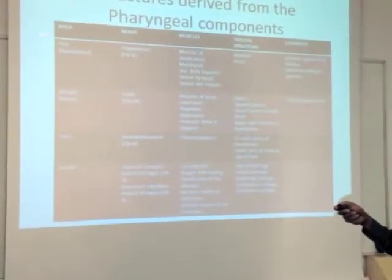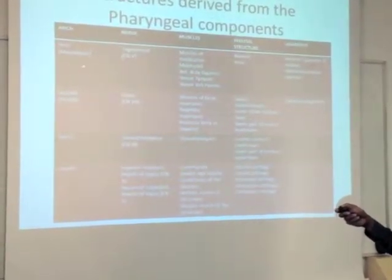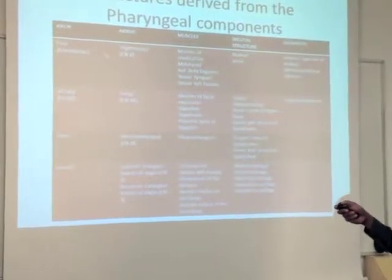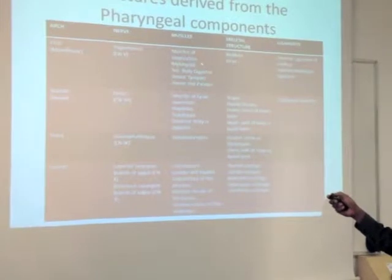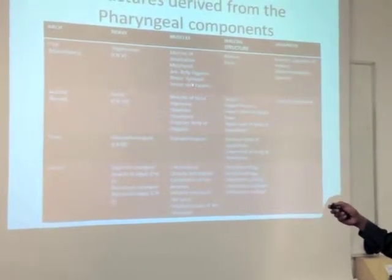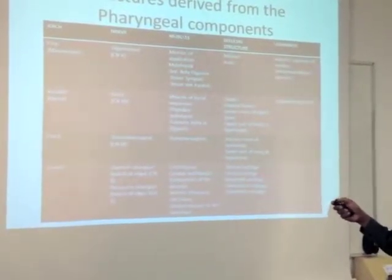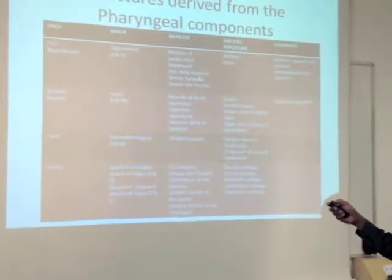We've got your first arch, which is your mandibular, and that's going to give off the trigeminal nerve. The muscles are the muscles mainly of mastication, so we've got the muscles of mastication, the mylohyoid, and anterior belly of digastric.